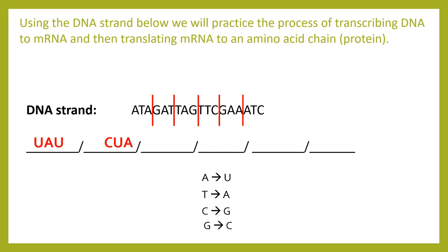For the third codon TAG: T matches with A, A matches with U, G matches with C — giving us AUC. For the fourth codon TTC: T matches with A, T matches with A, C matches with G — giving us AAG. For GAA: G matches with C, A matches with U, A matches with U — giving us CUU. For the last codon ATC: A matches with U, T matches with A, C matches with G — giving us UAG. Remember: A always matches with U, T always matches with A, C always matches with G, and G always matches with C.